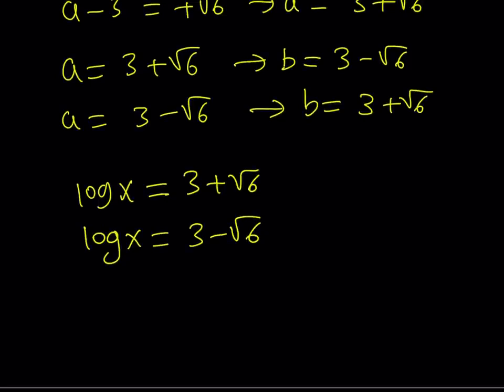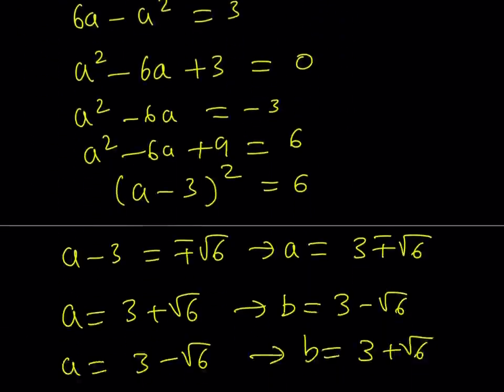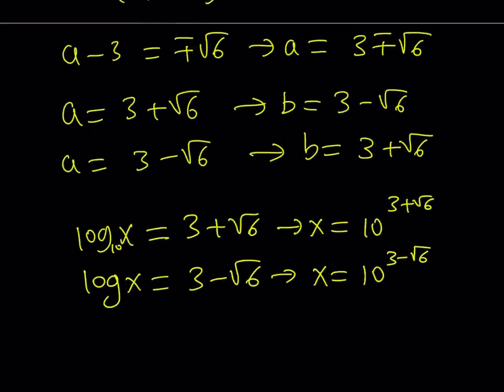Now, if you raise, if you do 10 to the power both sides or use the definition of logarithms, from here you're going to get x equals 10 to the power 3 plus root 6. And you're going to get x equals 10 to the power 3 minus root 6. Great. Well, we know that x and y both have to be positive. And since these are powers of 10, obviously they are going to be positive, right?